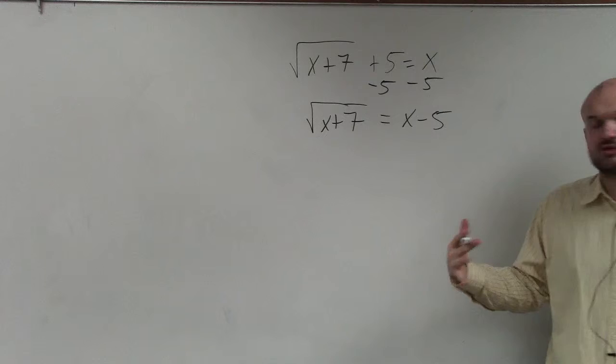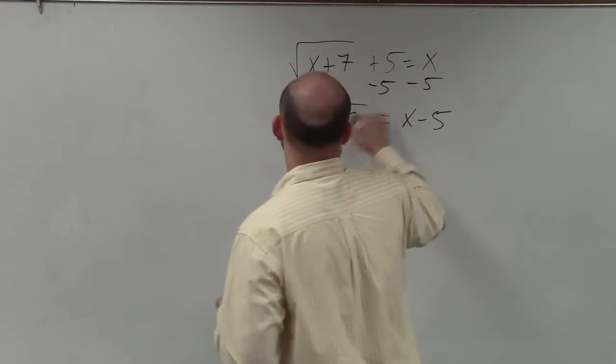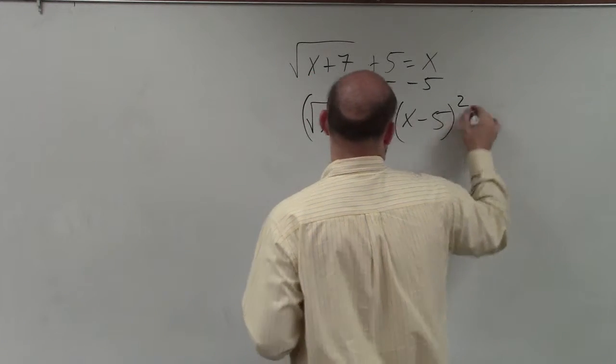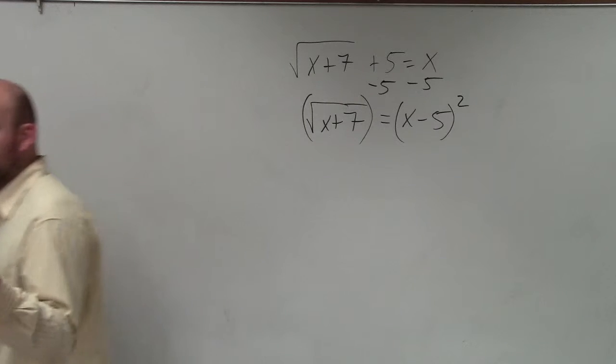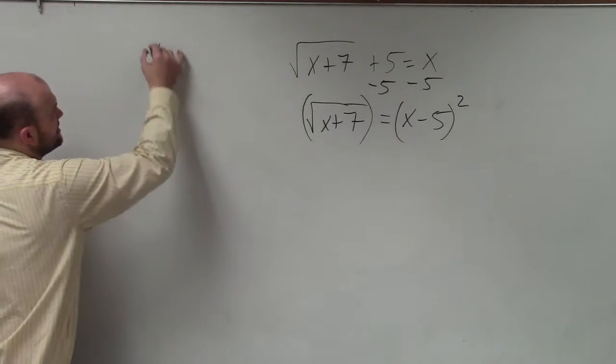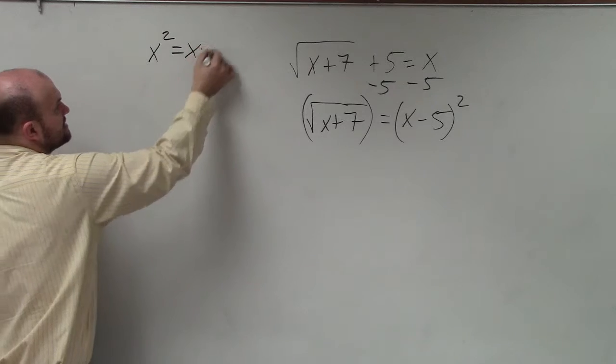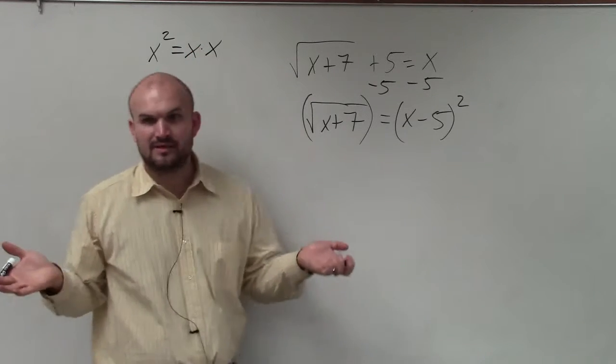So to undo the square root, I need to square it. So I'm going to square both sides. Now here's where the biggest mistake that students make. Please remember guys, x squared is x times x. Everybody agrees with me on that, right?